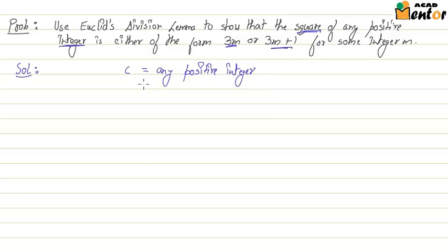What we have to prove is the square of c is of the form 3m or 3m plus 1, either of these two.